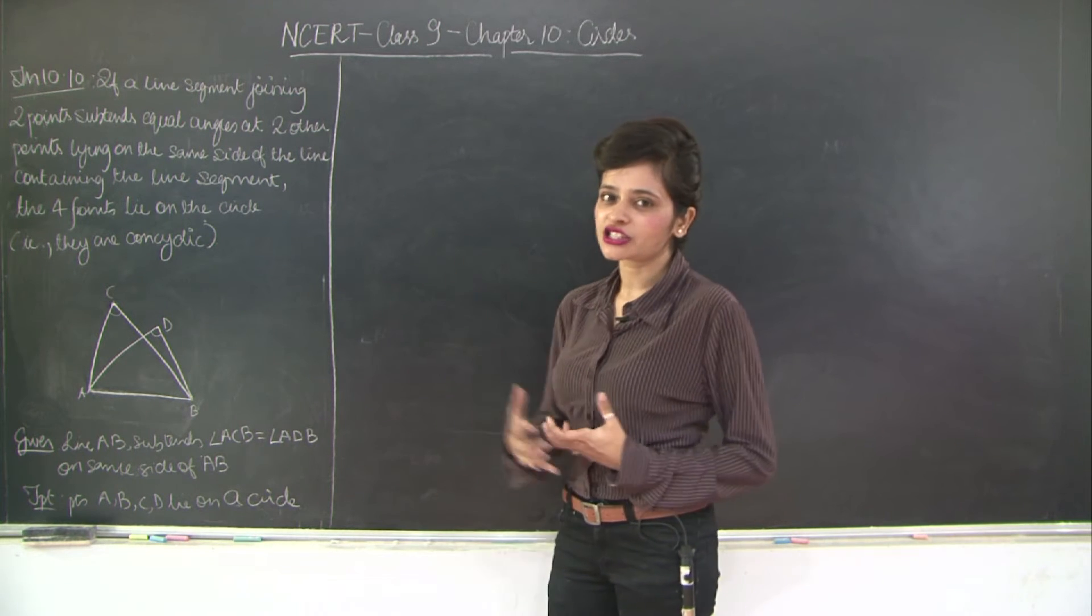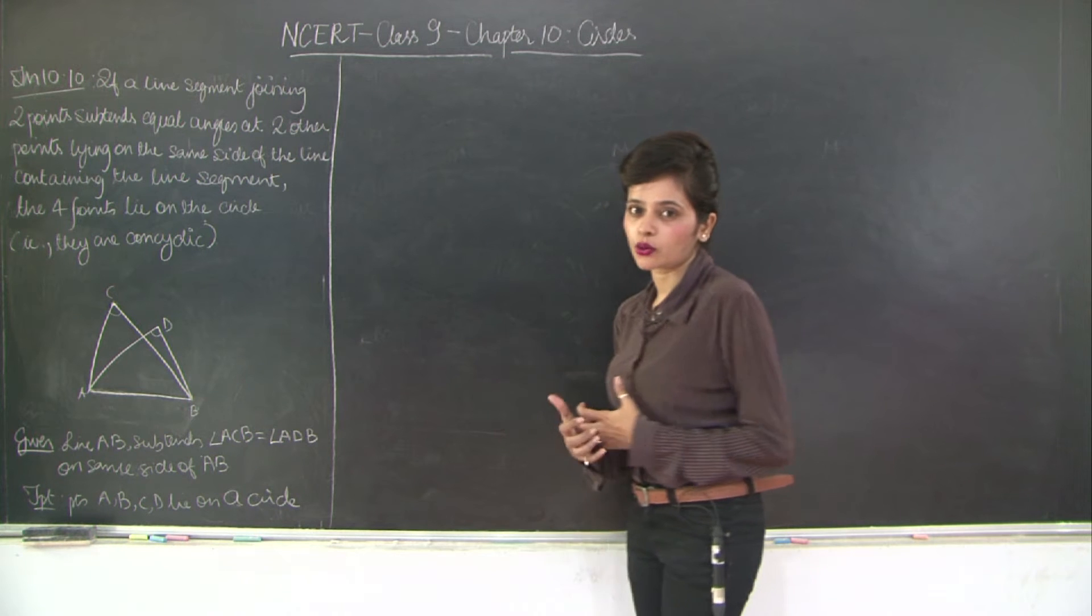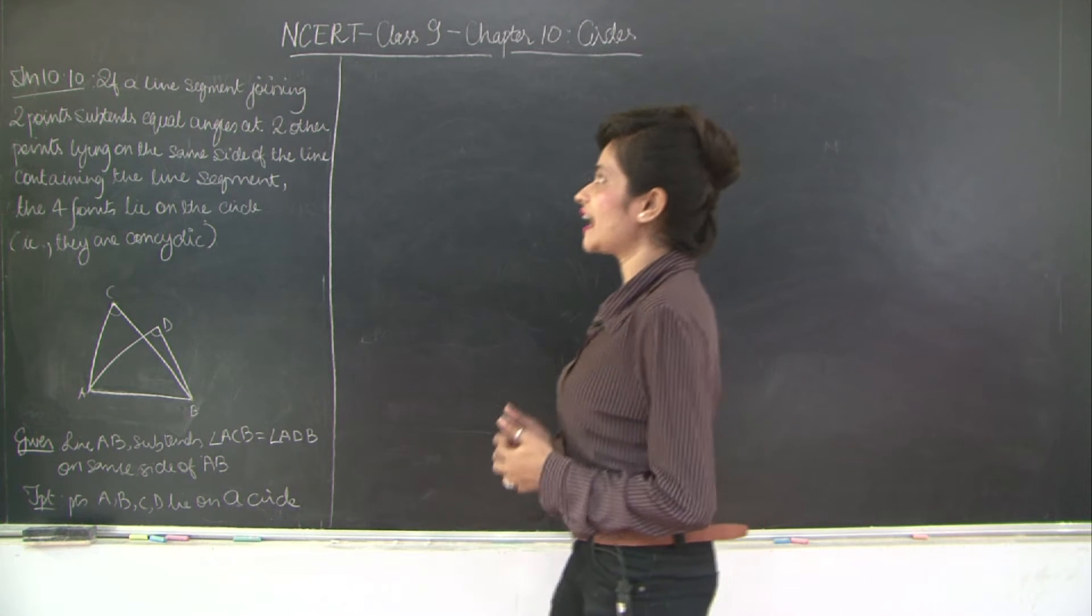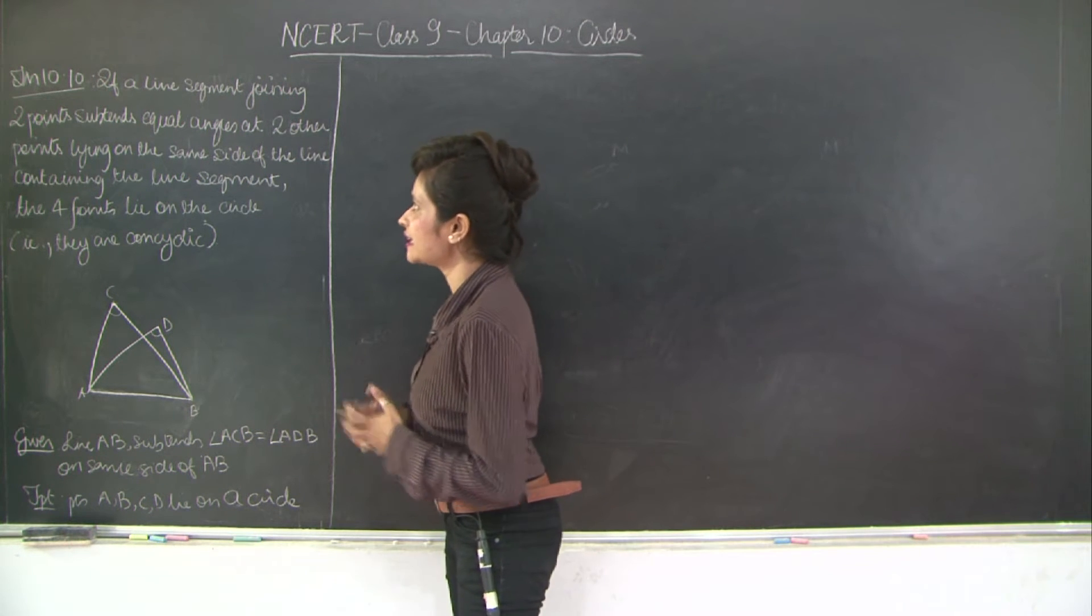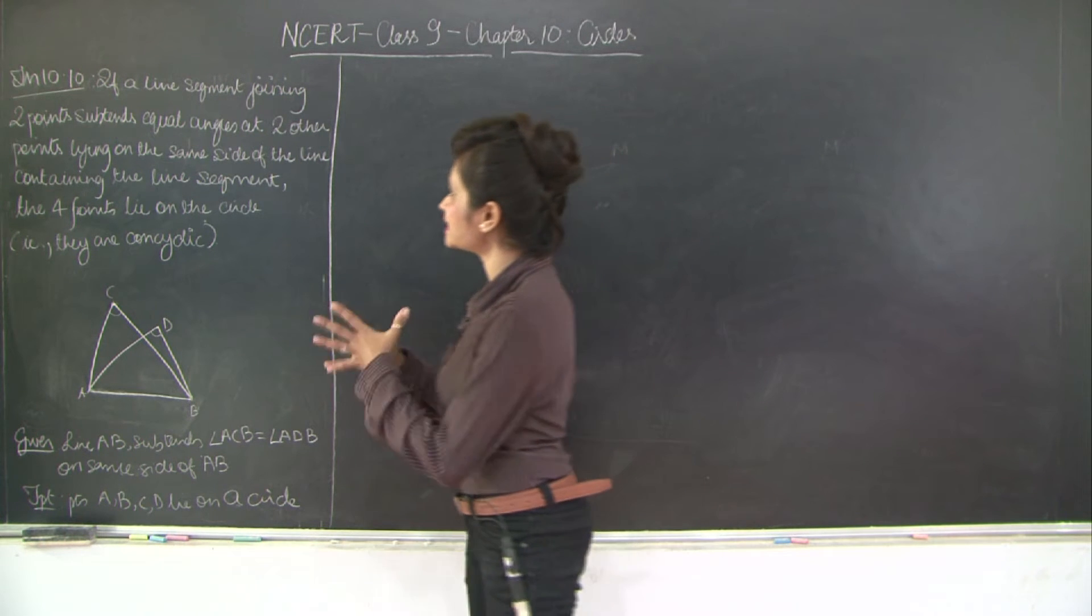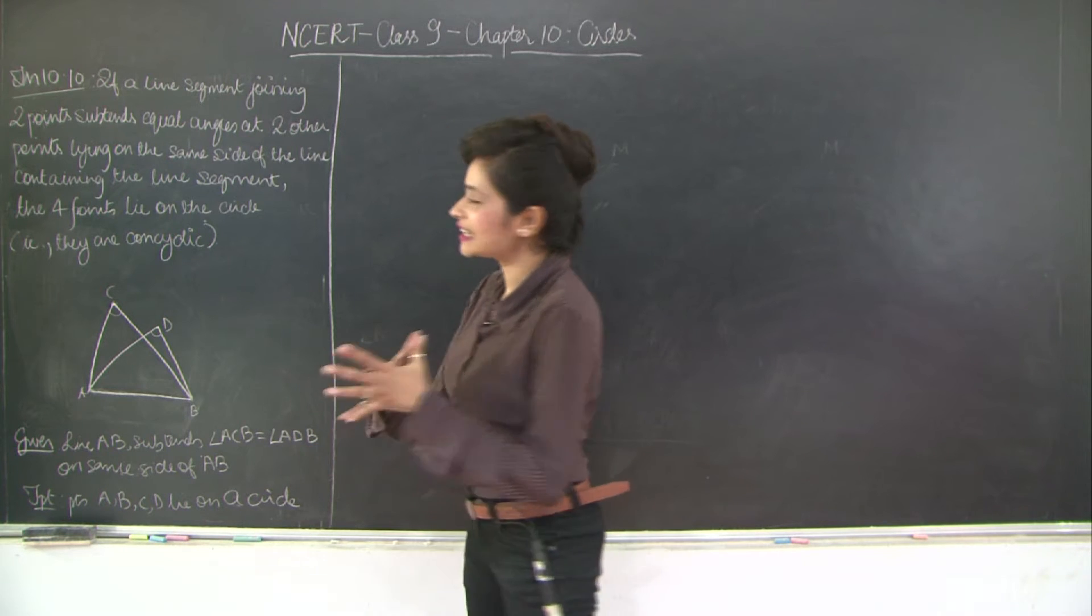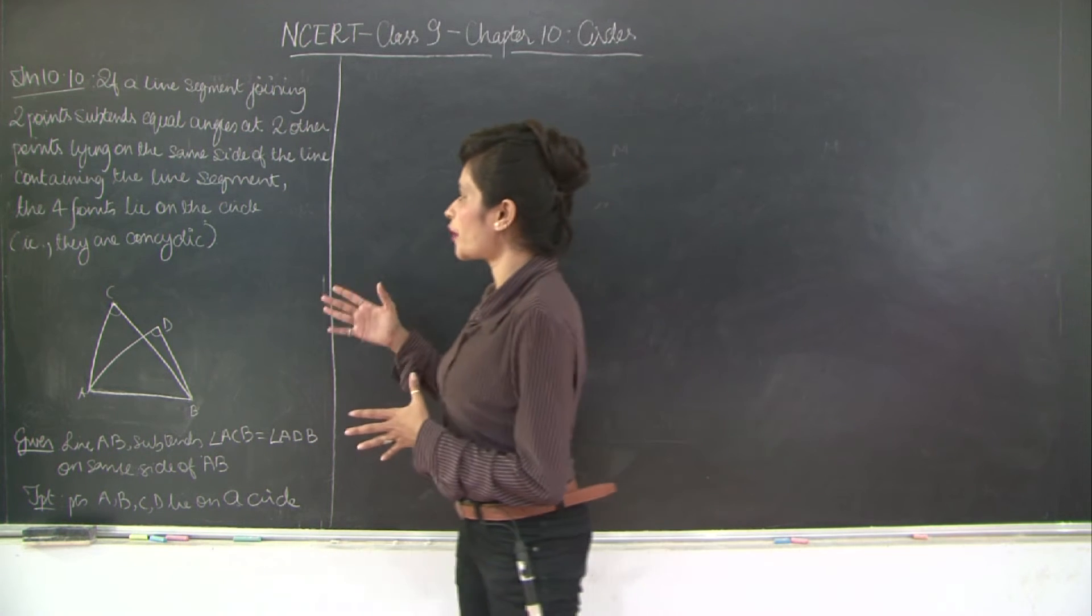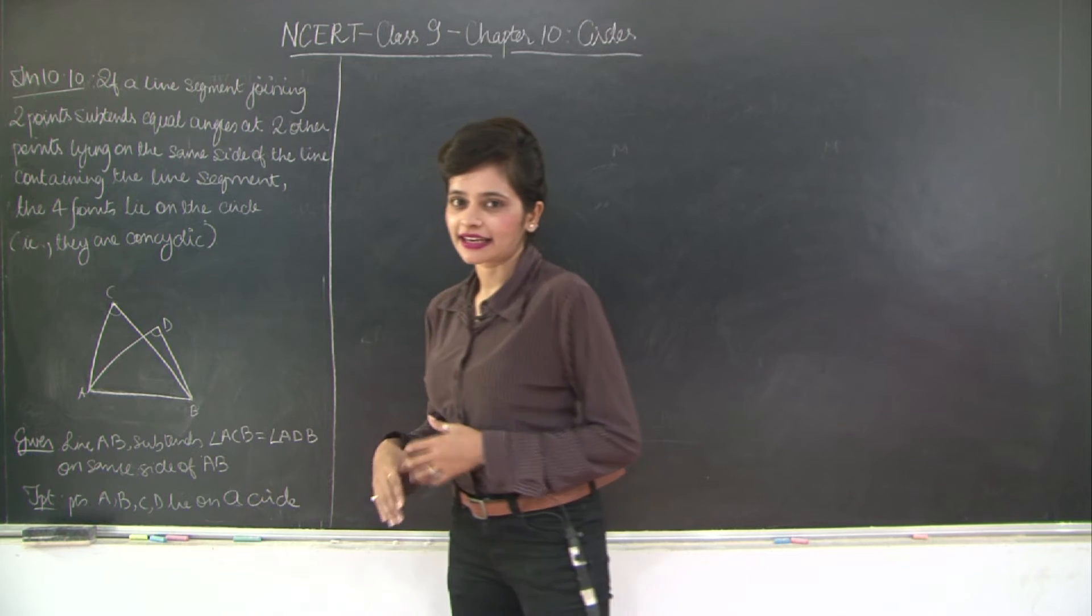Let's read the statement very slowly and try and understand what needs to be done. If a line segment joining two points subtends equal angles at two other points lying on the same side of the line containing the line segment, then the four points lie on the circle, that is they are concyclic.